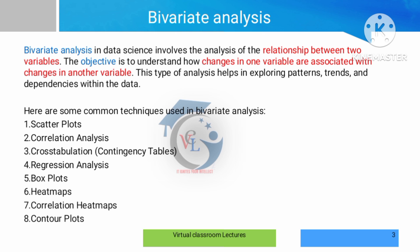There are two variables with two different dependencies. For example, Virat Kohli's score against Sri Lanka and against Australia varies based on the opponent team. In bivariate analysis, we analyze two variables together to generate a pattern and understand the dependency between the data, which is very helpful.